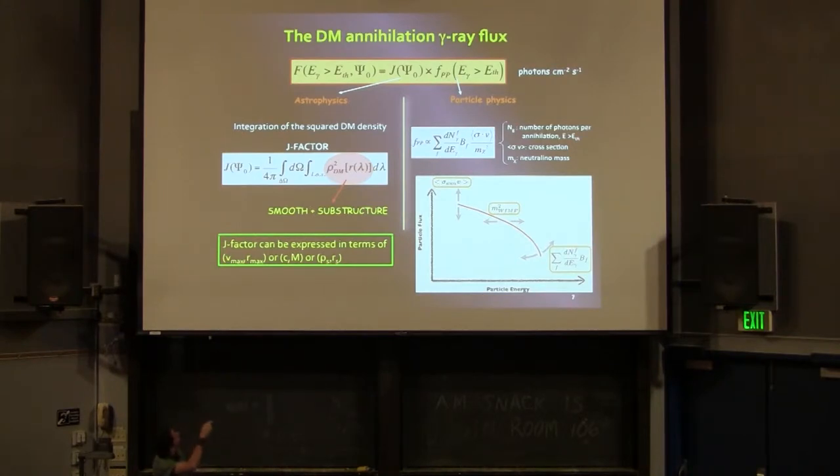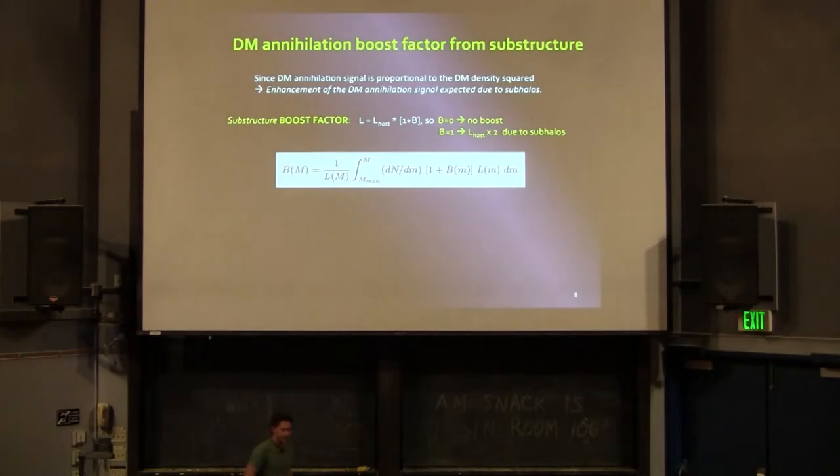I would like to mention also that this J-factor, since it's related to the dark matter density profile that you consider, can be also expressed in terms of the standard parameters for dark matter density profiles, not only like the scale radius or scale densities, but also concentration mass, or Vmax, Rmax, this kind of pair of parameters that give you the dark matter density profile.